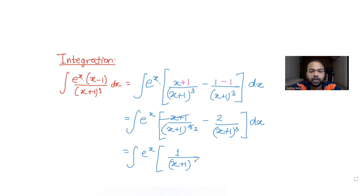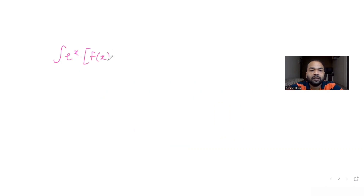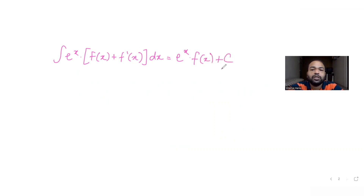I can write this as the integral of e raised to x — the first part is 1 upon (x plus 1) squared, and the second part is minus 2 upon (x plus 1) the whole cube — dx. Now I want to write this in the frame of e raised to x into [f(x) plus f'(x)] dx. We already know that for this form, the integral's answer is e raised to x into f(x) plus C.